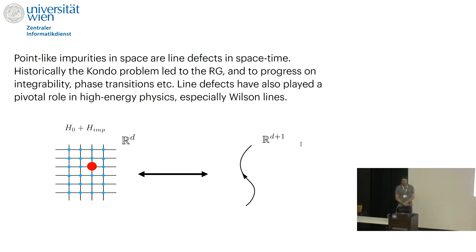Line defects in quantum field theory—you can think about them in two ways, and these two ways are complementary and useful. One is as a point-like impurity in a Hamiltonian picture. That's how condensed matter theorists think about line operators. Or if you like a more Euclidean perspective, you can think about it in D plus one dimensions as a line operator. I'll be going back and forth between these two ways of thinking about the same thing, because they're useful for various purposes.